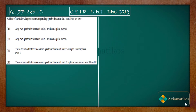It is of Part C. The question asks: which of the following statements regarding the quadratic form in three variables are true? Option one says any two quadratic forms of rank 3 are isomorphic over ℝ. Option two says any two quadratic forms of rank 3 are isomorphic over ℂ. We will see how to solve options one and two first.